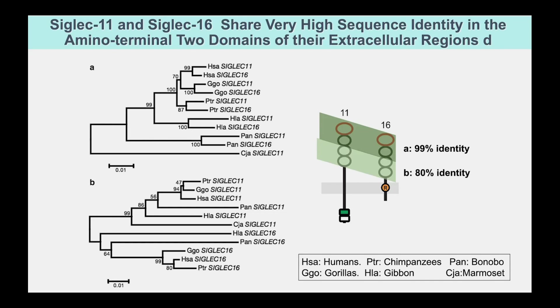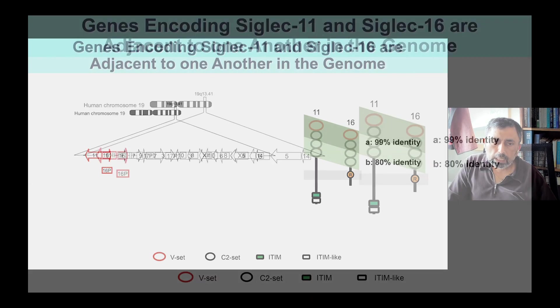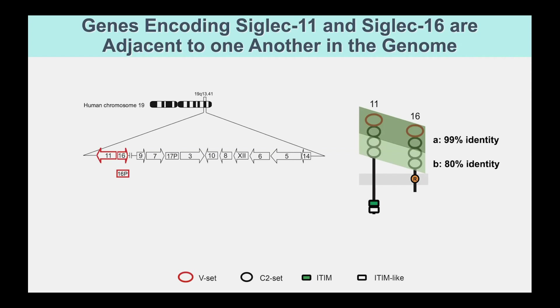In a phylogenetic diagram, you would expect Siglec-11 to be in the same group with gorillas and chimpanzees. But the upper domain is identical within a species — that's the complicated part. Basically, the genes encoding Siglec-11 and Siglec-16 are adjacent in the genome, right next to each other. During meiosis and production of germ cells, they undergo gene conversion — they keep pasting each other, keeping Siglec-11 and Siglec-16 identical in the first two domains. So you have molecules identical in the first two domains but sending opposite signals. These are called paired receptors, and they modulate inflammatory response in opposite directions.